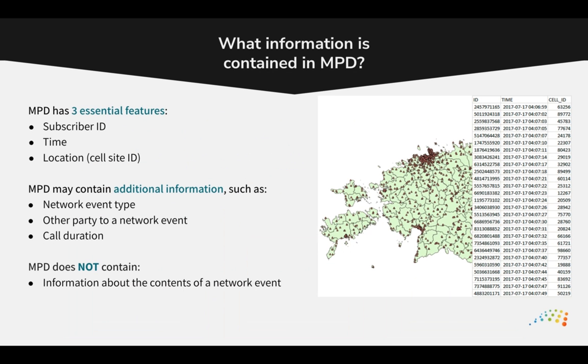Mobile phone data has three essential features for studying mobility: a subscriber identifier, a time attribute, and the location of the cell tower which routed the network event. With these three features, we can link together the locations of a subscriber over time to generate an individual trajectory — a record of an individual's movements. By combining and anonymising the data of many subscribers, we can produce insights into broader patterns of movement and mobility across a broad range of applications.